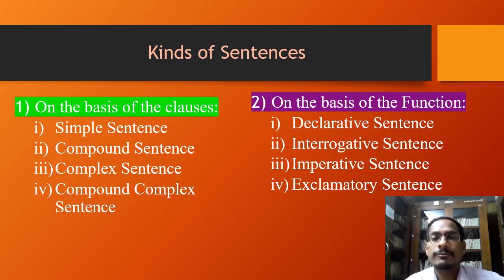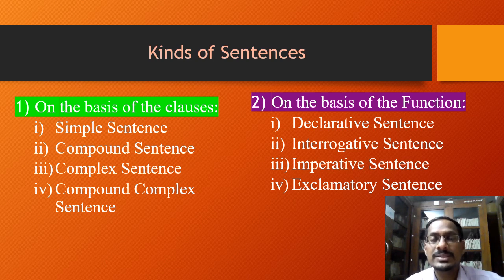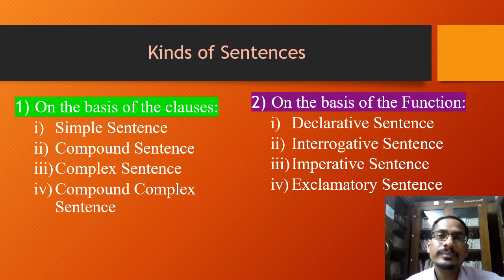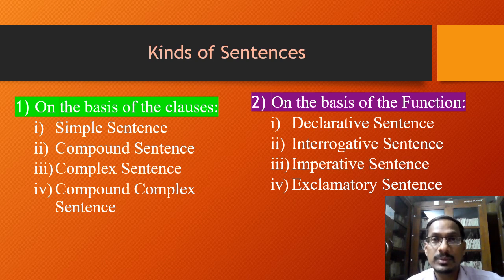Just like on the basis of the number of clauses, we can also classify sentences on the basis of their use or functions. According to the function of the sentences, there are four types: declarative sentence, interrogative sentence, imperative sentence, and exclamatory sentence. Here, I will mainly focus on the kinds of sentences on the basis of their function and will discuss some examples.